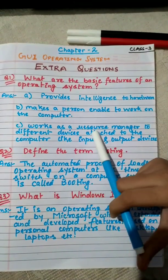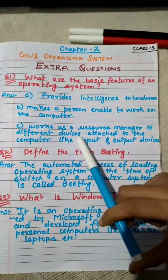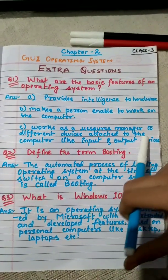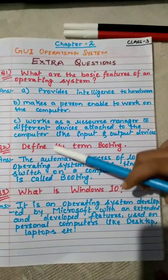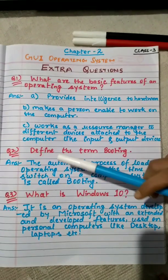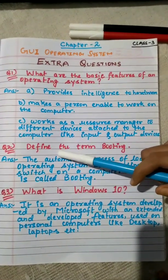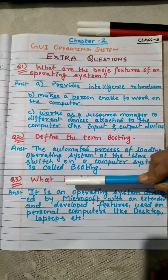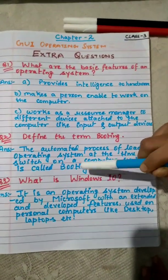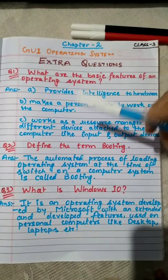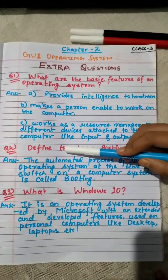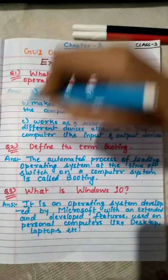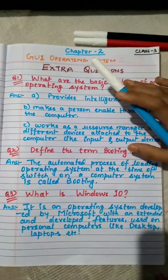It works as a resource manager to different devices attached to the computer like input device and output device. If you give any command to the computer system through a keyboard, that input command is connected through the computer memory through operating system. And the command of output should be sent through monitor or any other output devices. All these works are done through an operating system.